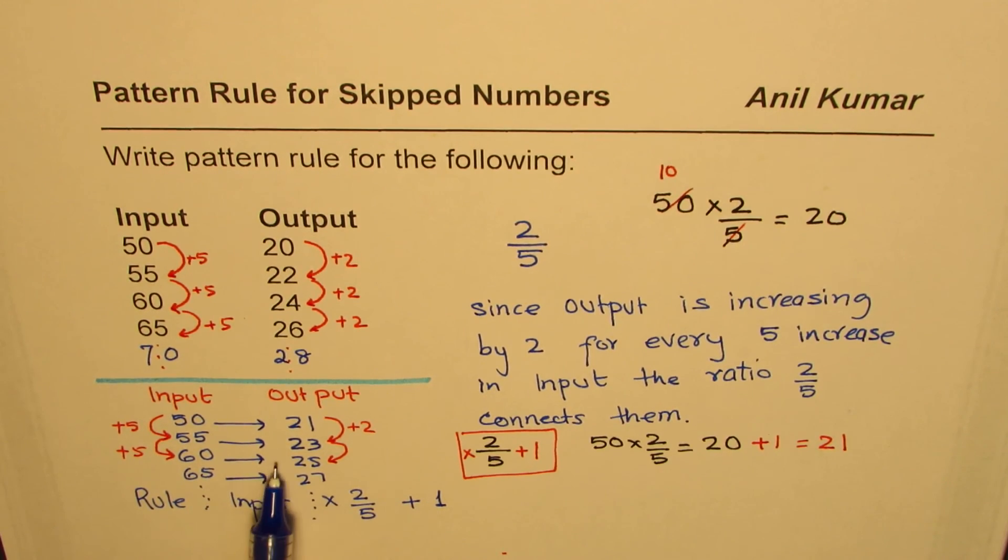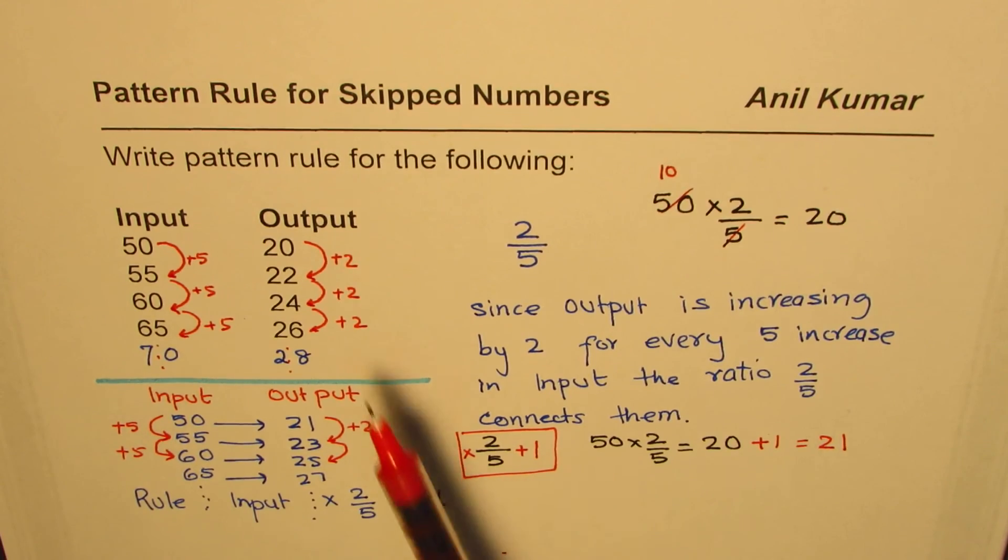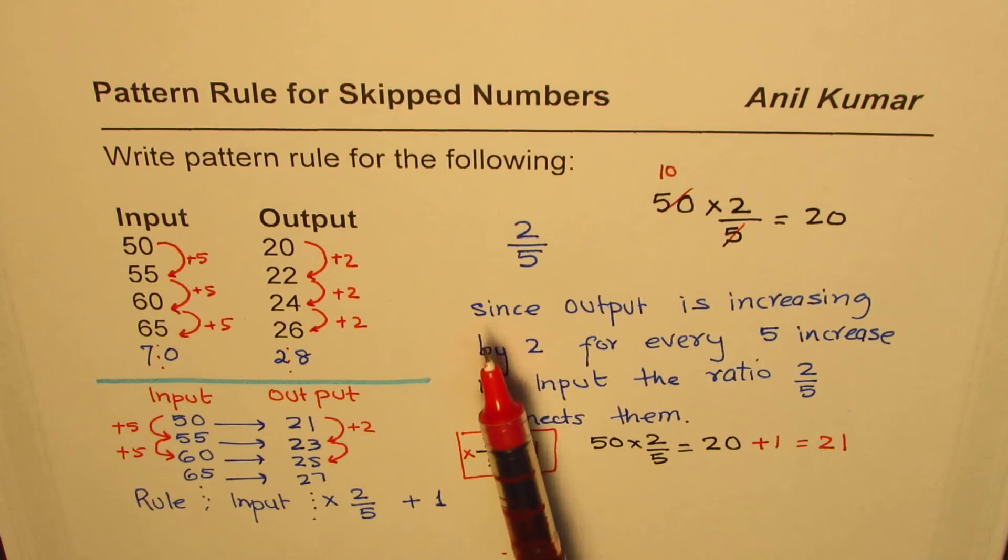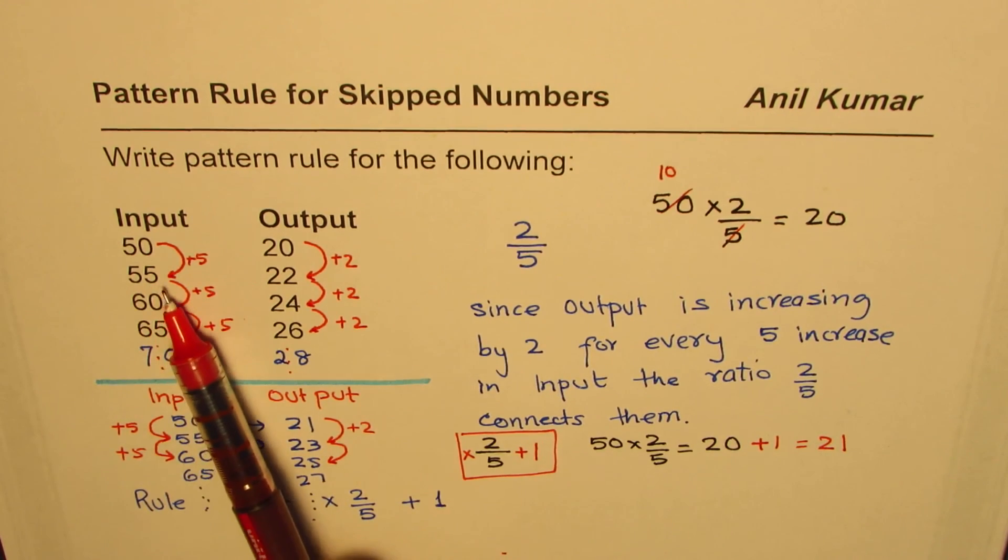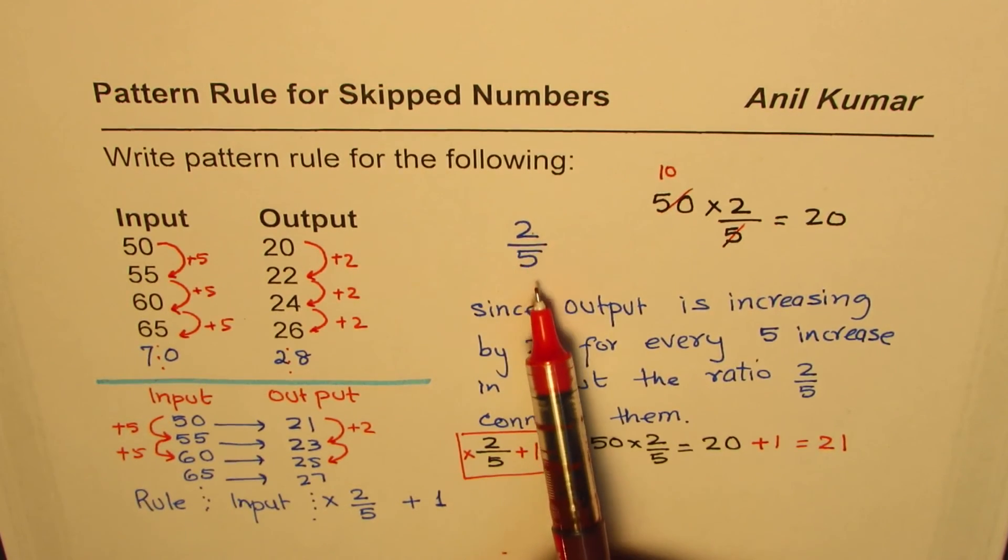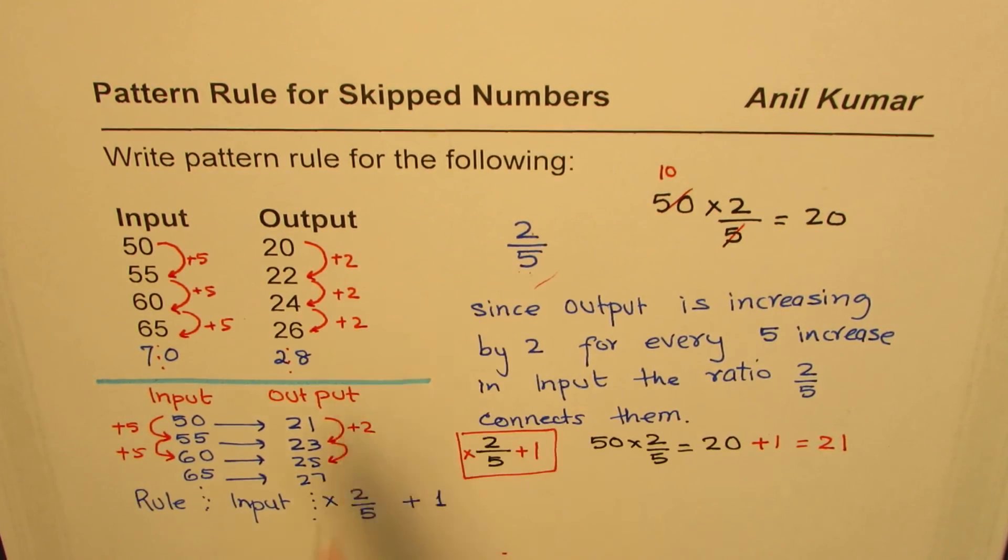If you apply that rule here you'll get your outputs. I hope that helps. But a common thing here is the ratio 2 over 5, which we get from this concept. We have to see: for how much increase in input is there an increase in output? So the ratio of increase in output over increase in input - this number plays an important role to find the rule.